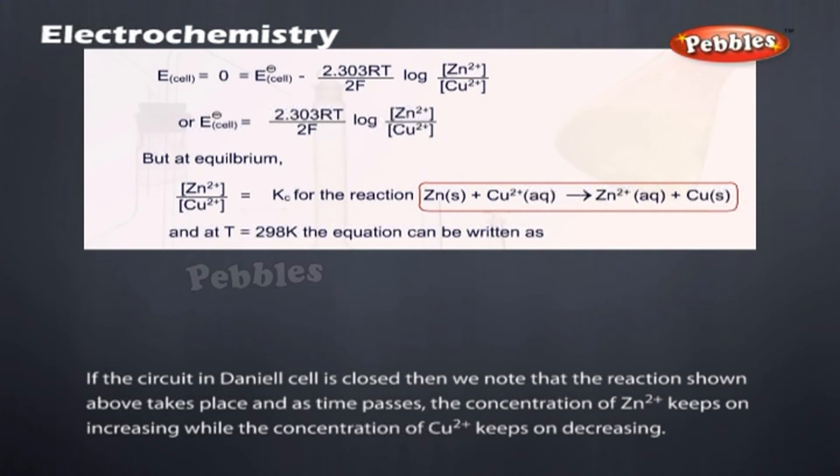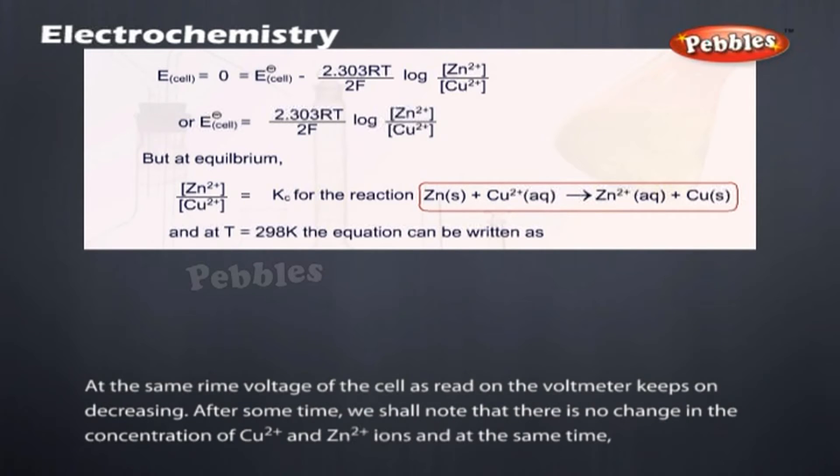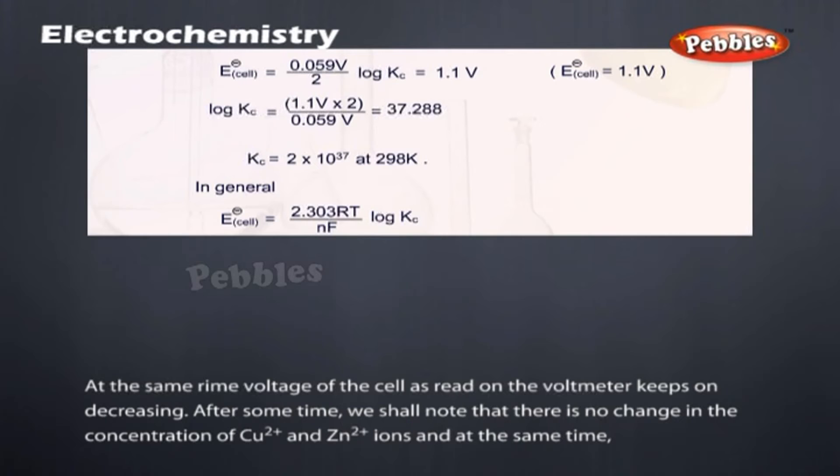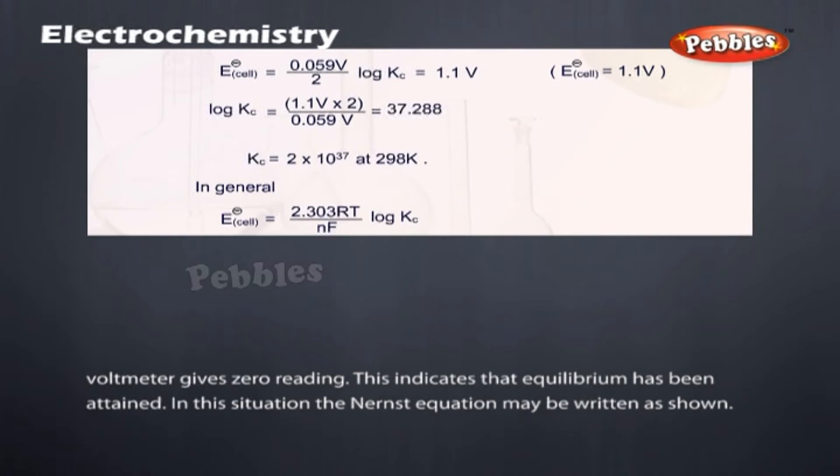If the circuit in Daniel's cell is closed, then we note that the reaction shown above takes place and as time passes, the concentration of Zn2+ keeps on increasing while the concentration of Cu2+ keeps on decreasing. At the same time, voltage of the cell as read on the voltmeter keeps on decreasing. After some time, we shall note that there is no change in the concentration of Cu2+ and Zn2+ ions and at the same time voltmeter gives zero reading.